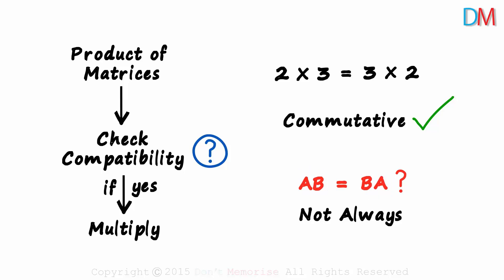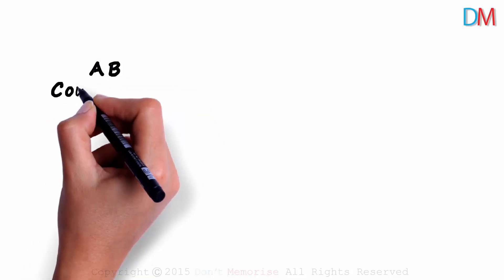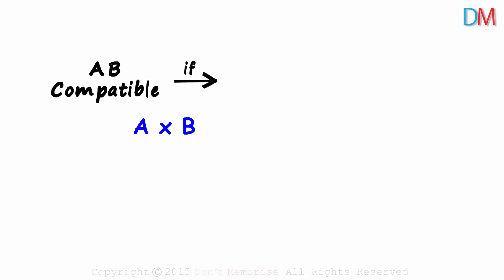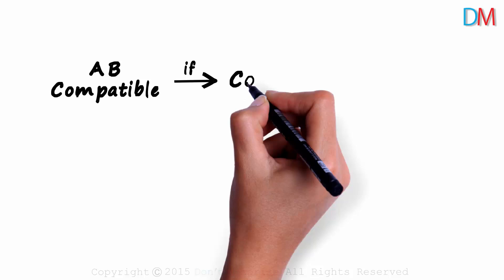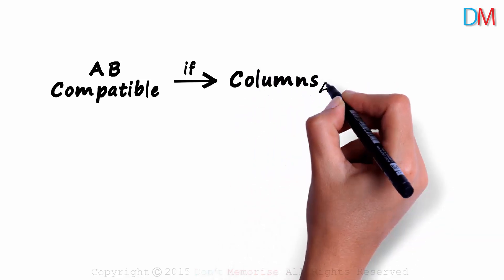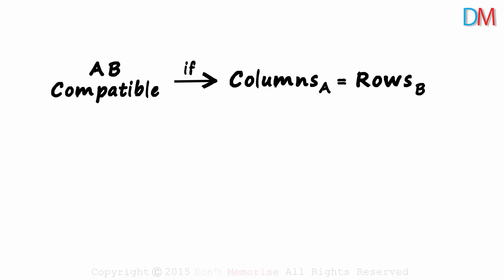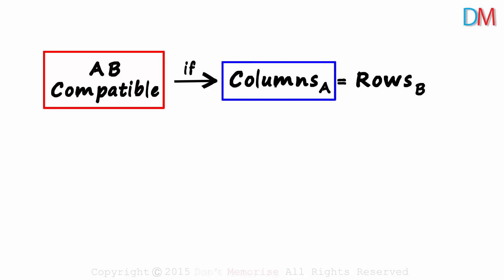Now let's move on to how we can check for compatibility. Here's the rule: the product AB is compatible if — note that we are talking about A times B here and not B times A — A is the first matrix and B is the second. The product AB is compatible if the number of columns in matrix A is equal to the number of rows in matrix B.